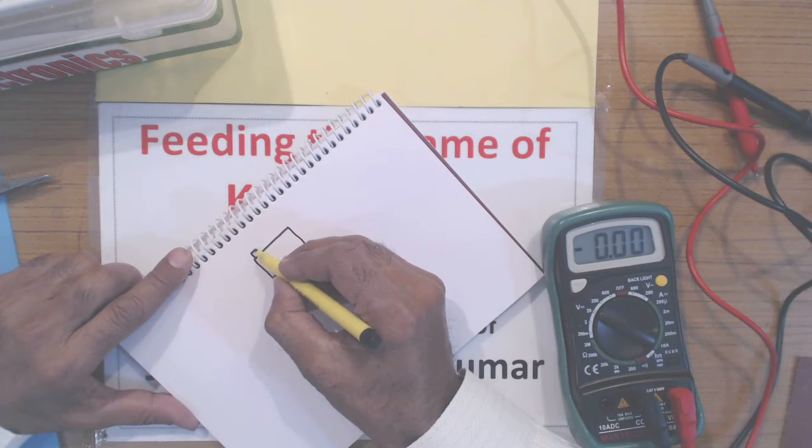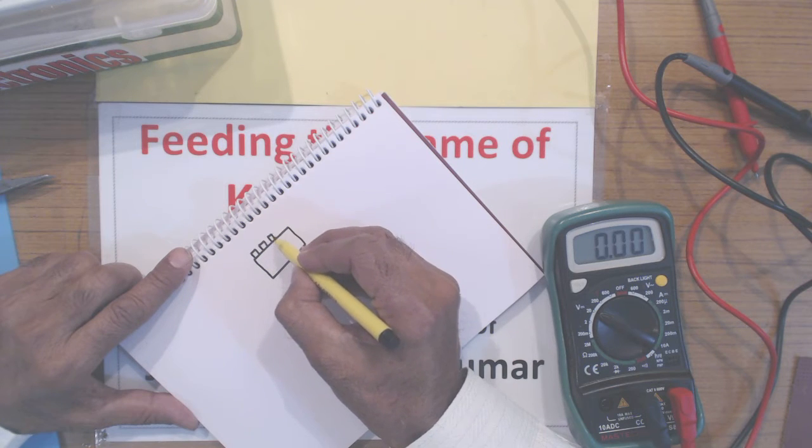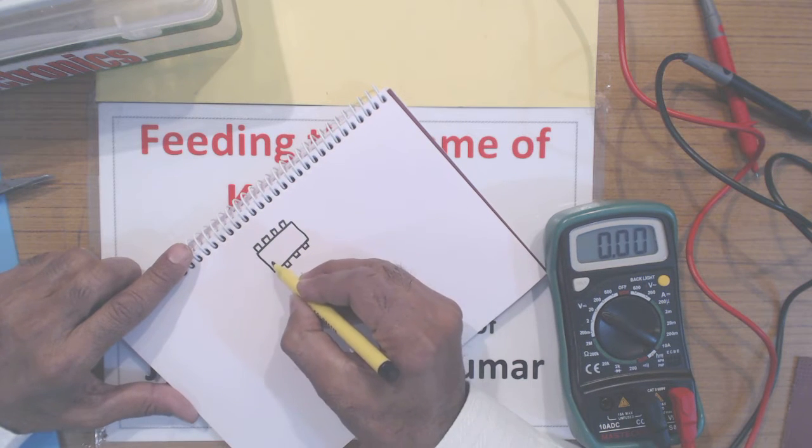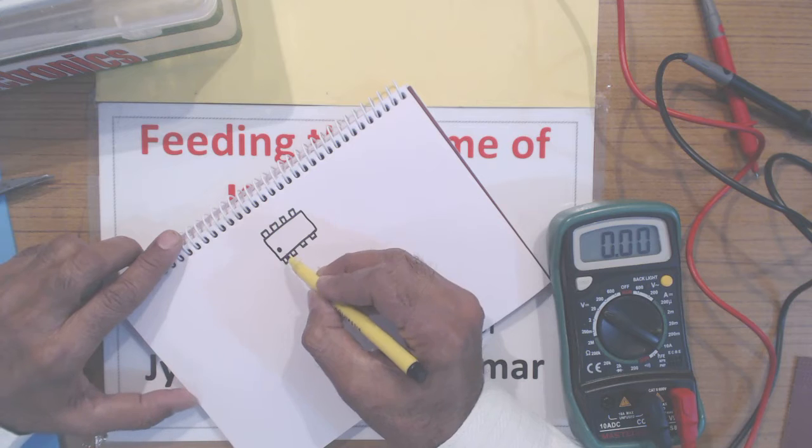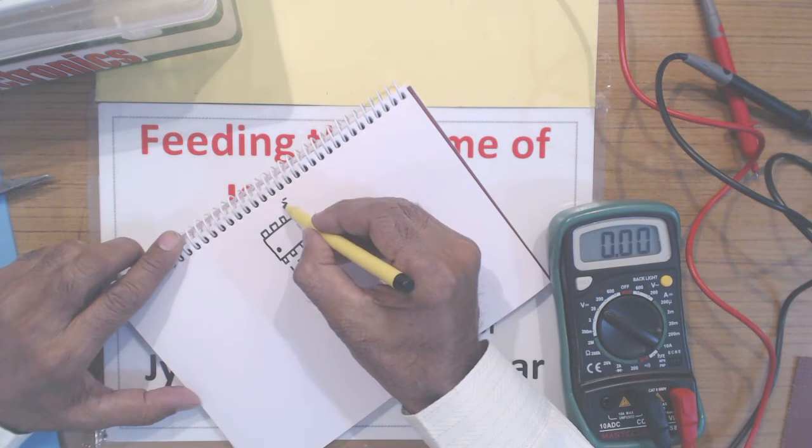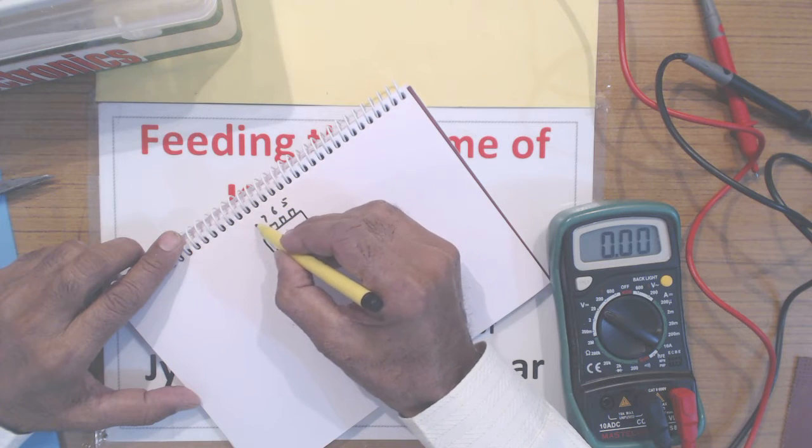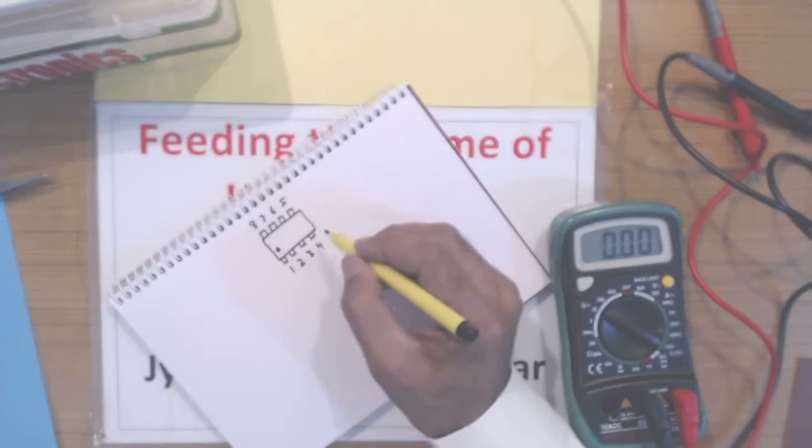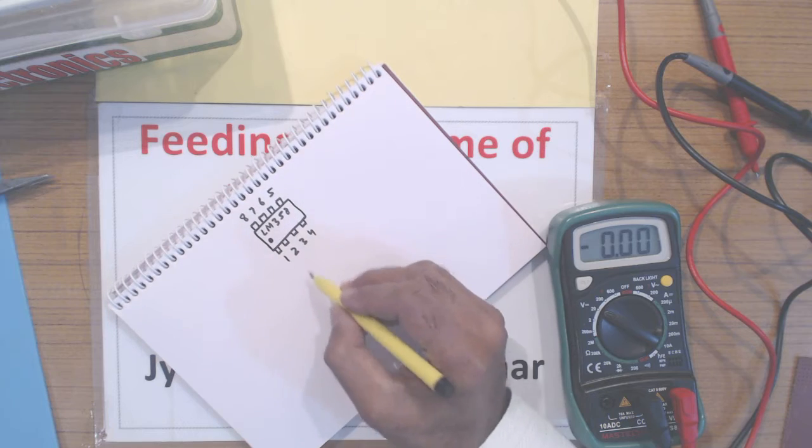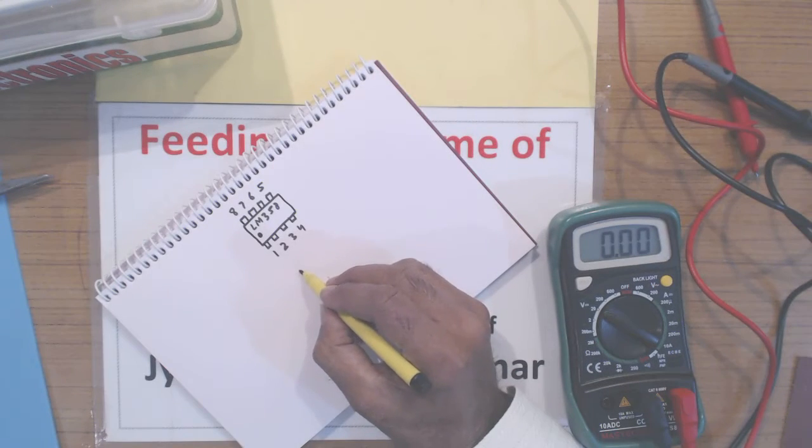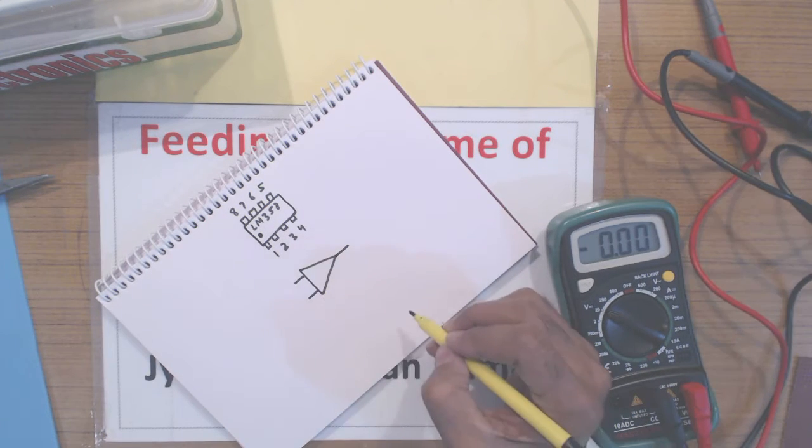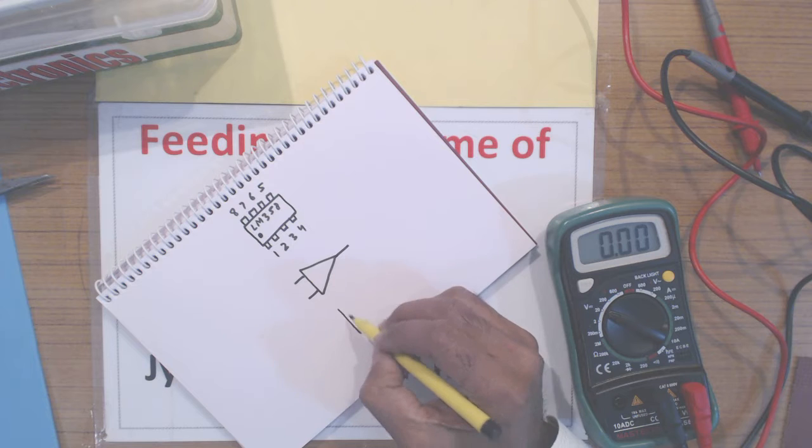This op-amp is in an 8 pin package with 4 pins on each side. There is a spot along one side which indicates pin number 1, then 2, 3, 4, 5, 6, 7, and 8. Inside there are 2 independent operational amplifiers. This is a symbol for operational amplifier and there are 2 inputs.